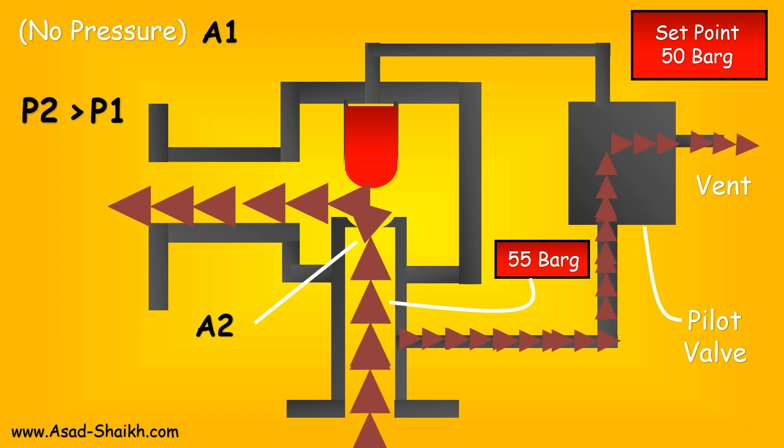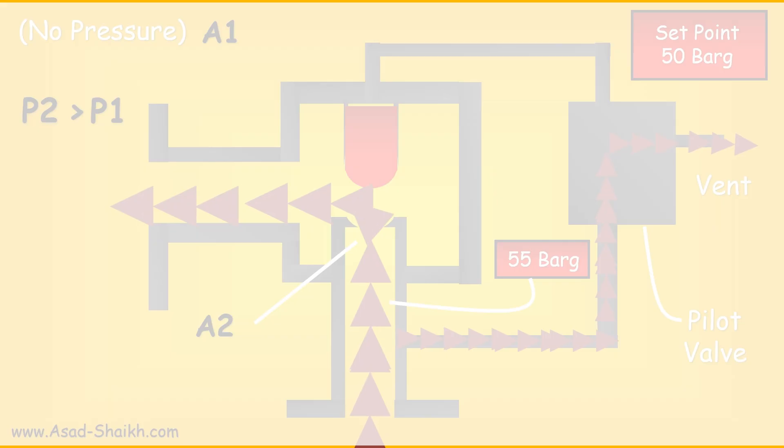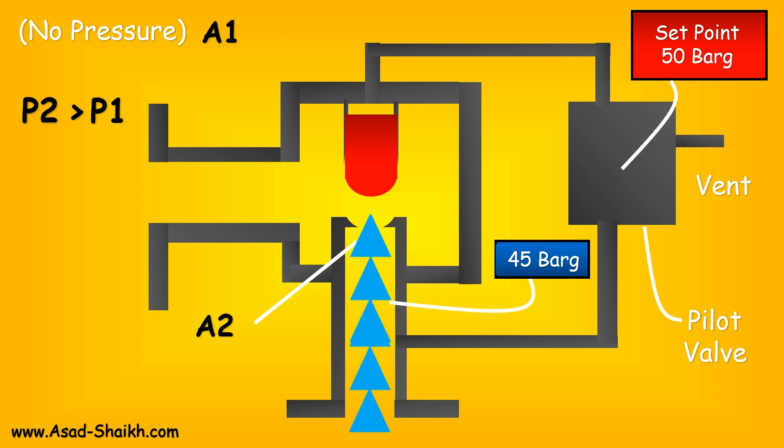Please note that this entire phenomenon is happening in just a few milliseconds. As soon as this pressure is getting released, eventually the inlet pressure is going to get reduced. If you see here, this pressure has now gone to 45 bar. When that happens, this pressure is also getting translated at the same time to your pilot, but the pilot is set at 50 bar.